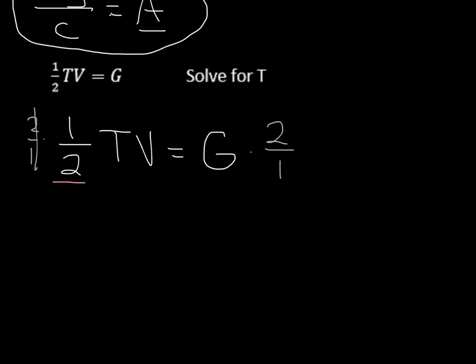Now look, one-half times two over one, those cancel out over here, and we just have tv equals, and over here on the right-hand side, two over one, that's just two. Two times g is two g.